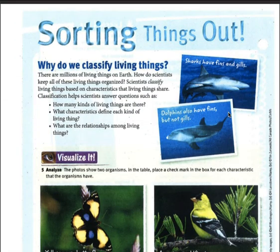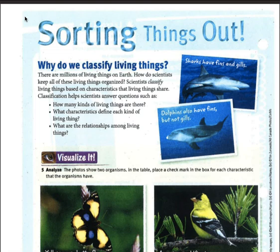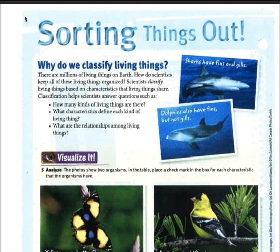So let's get started — why do we classify living things? There are millions of living things on Earth, maybe hundreds of millions. We have classified, sorted, and named only about two million. There were things in the past that are now extinct, and there are things we haven't even discovered yet. So we are just beginning to learn how these are all related. How do scientists keep all of these living things organized? Scientists classify living things based on characteristics that living things share.